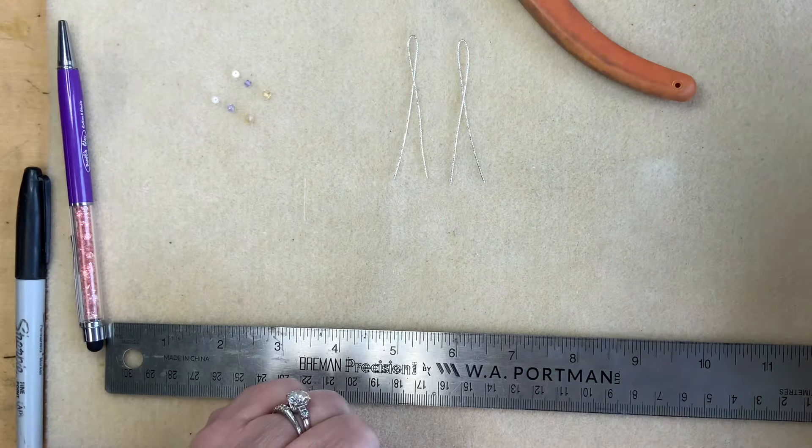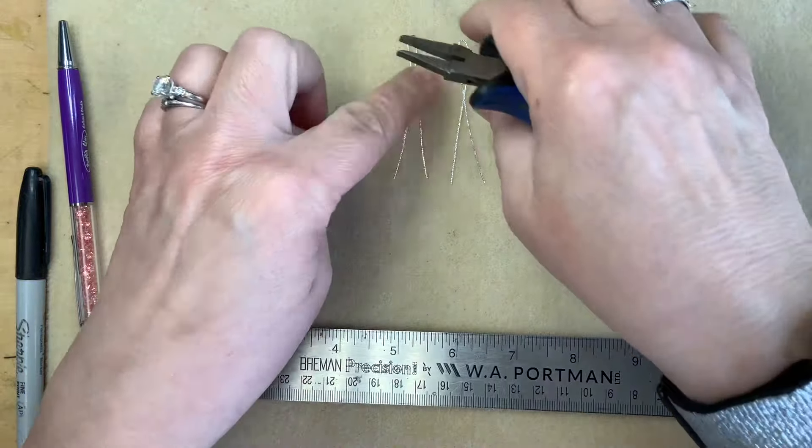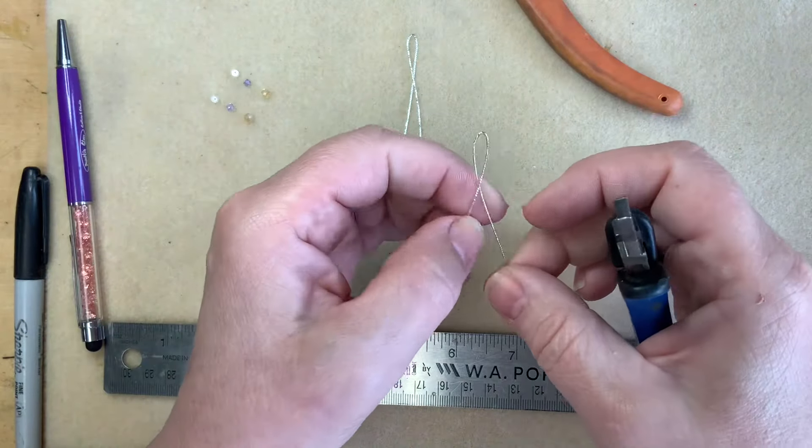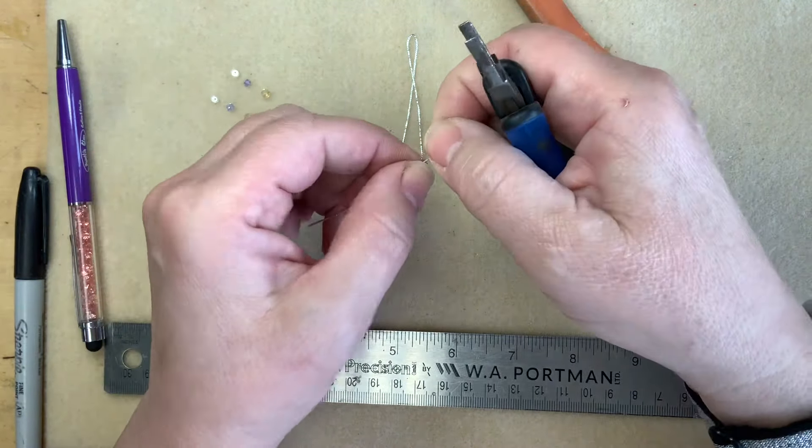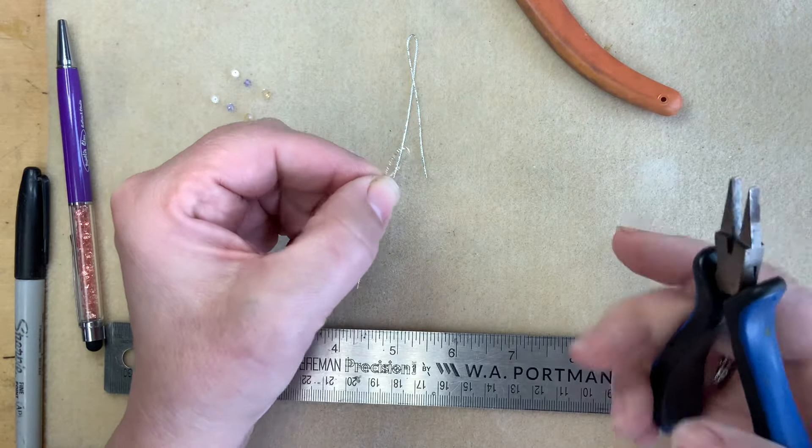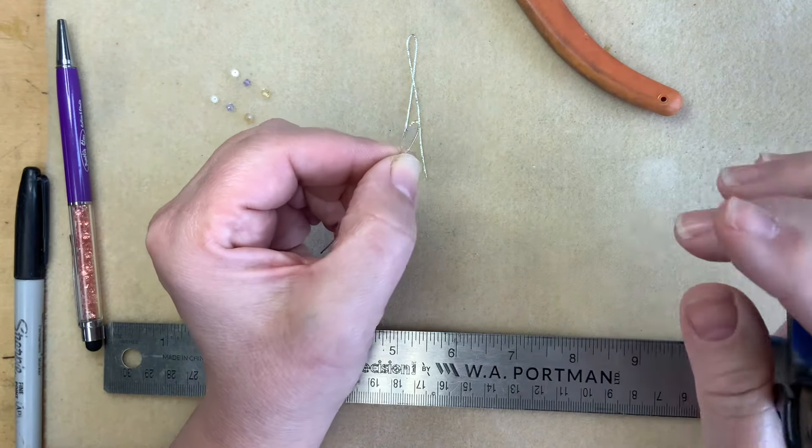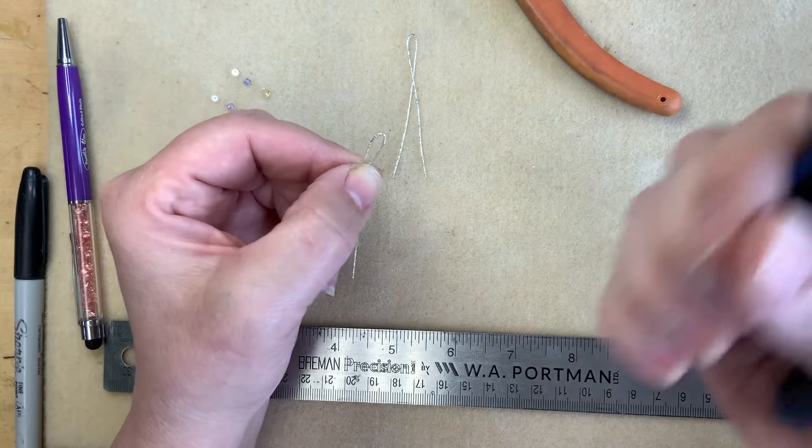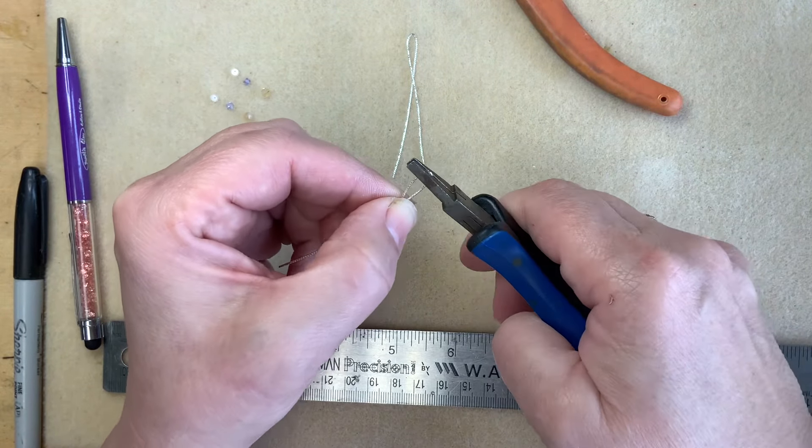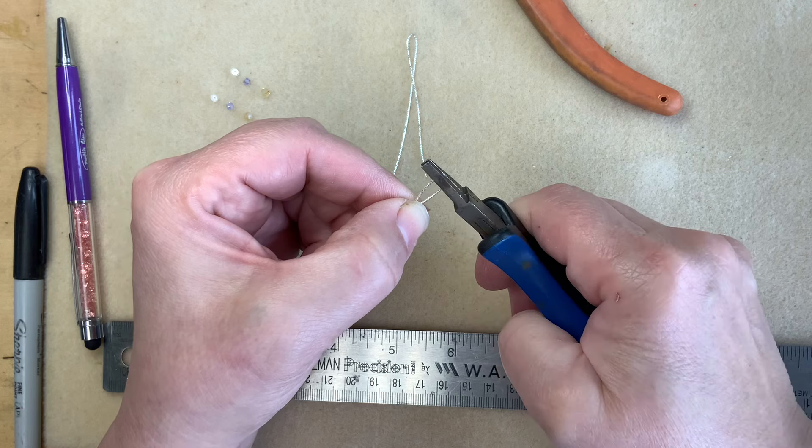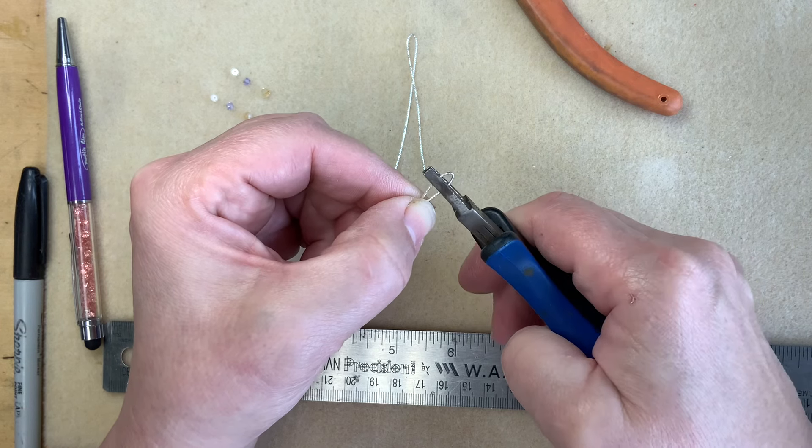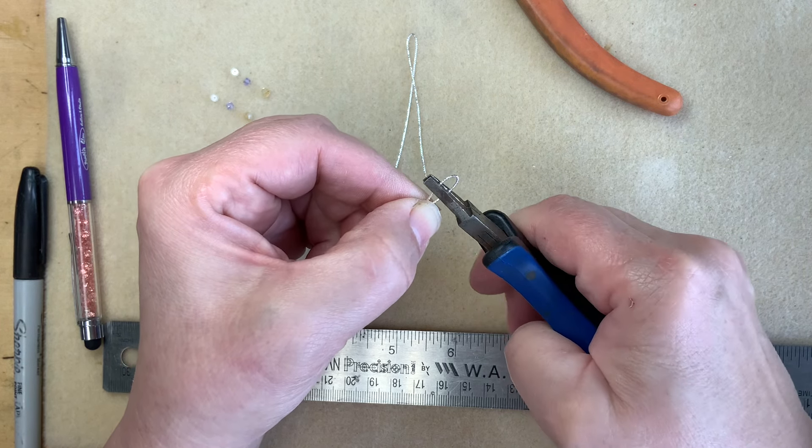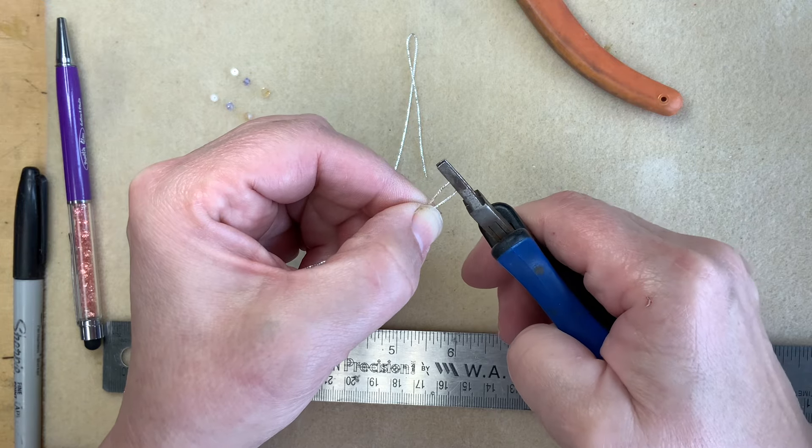Next, I want to work harden this little bend here at the end, because I want to keep that shape. And I don't want it to open up as I put my ear wires on. So I'm doing something called work hardening. I know it looks like a small detail, but it does matter.